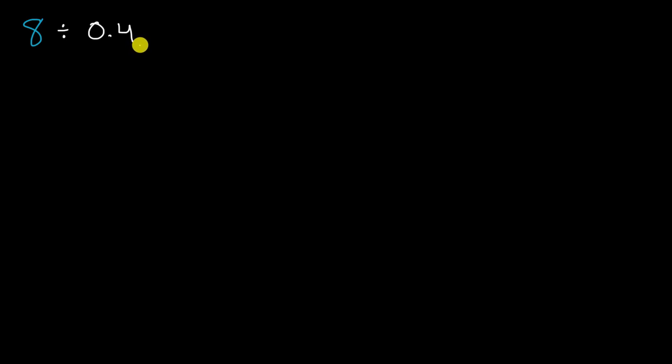All right, now one way to approach this is to think about everything in terms of tenths. And why tenths, you ask? Well, I just described the second number as four tenths. So what would eight be in terms of tenths? Well, we know that one whole is equal to 10 tenths. So eight wholes is going to be equal to 80 tenths.